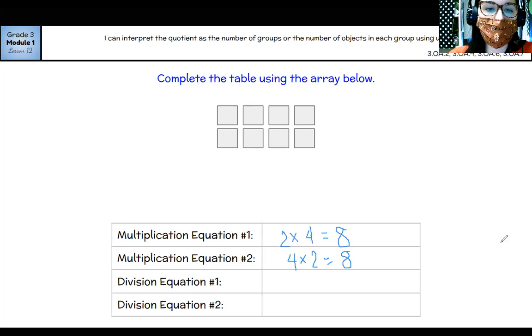All right, let's check out division. How many do I have all together is always what I start with in division. So I have eight. If I divide them into groups by rows, if I look at this and think, okay, I have two groups, then I would say eight divided by two equals four in each group.